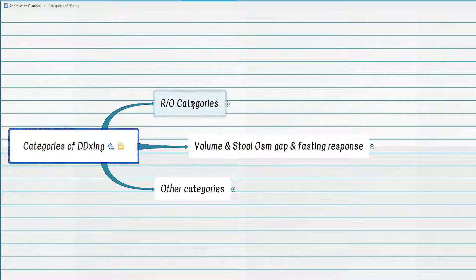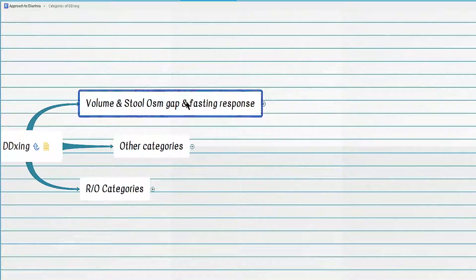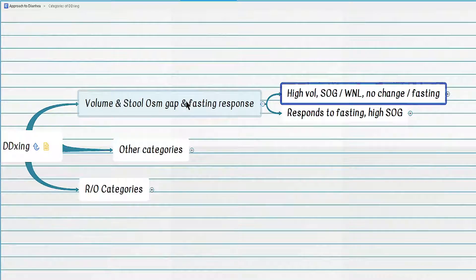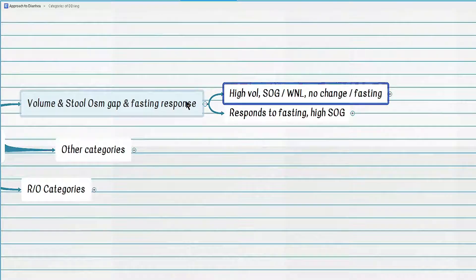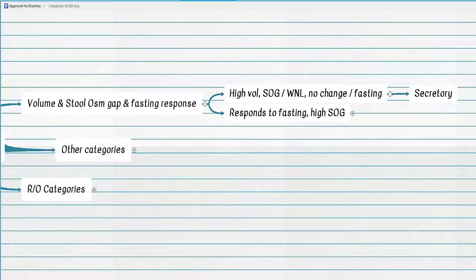Consider a patient with high-volume chronic diarrhea that fails to respond to fasting. In this case, high-volume diarrhea with no response to fasting indicates secretory diarrhea. In secretory diarrhea, stool osmotic gap is usually within normal limits — referred to as low stool osmotic gap, or osmotic gap less than 50.